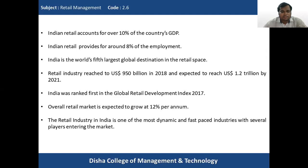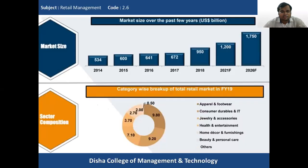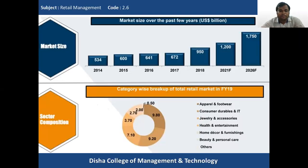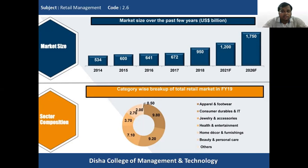Looking at infographic images showing market size for past years: in 2014 it was 534 billion, growing to 600 billion in 2015, 641 billion, then 672 billion in 2016, 950 billion in 2017-2018, expected to reach 1.2 trillion by 2021, and an estimated 1.75 trillion by 2026 — showing tremendous growth in the Indian retail market.